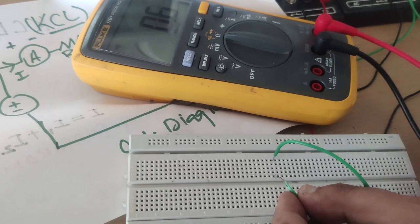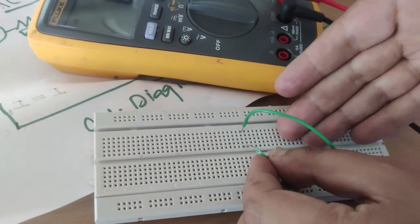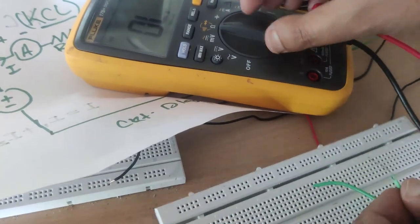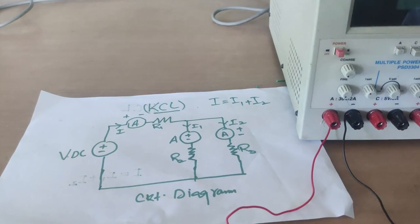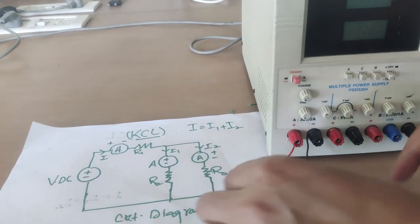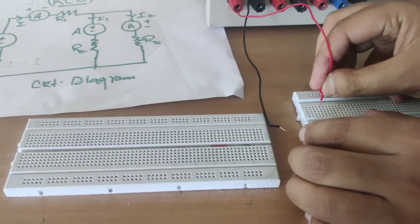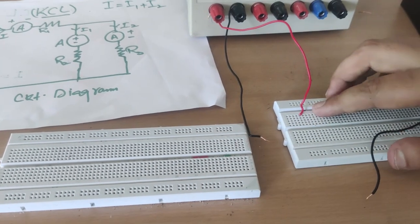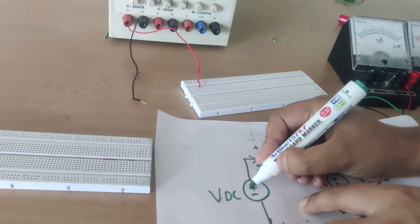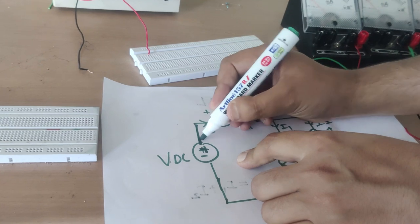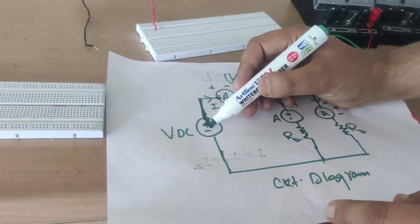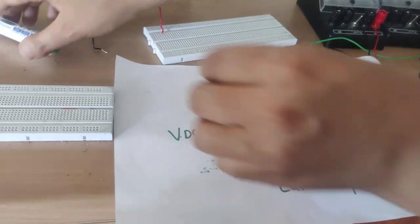So if you don't remember whether lines are shorted vertically or horizontally, just use the multimeter and check continuity. Now we will start drawing the circuit on the breadboard. Keep your eyes on the circuit diagram. The positive terminal of the voltage supply goes here, and then there is a line between the ammeter and the voltage source, which I will connect now.